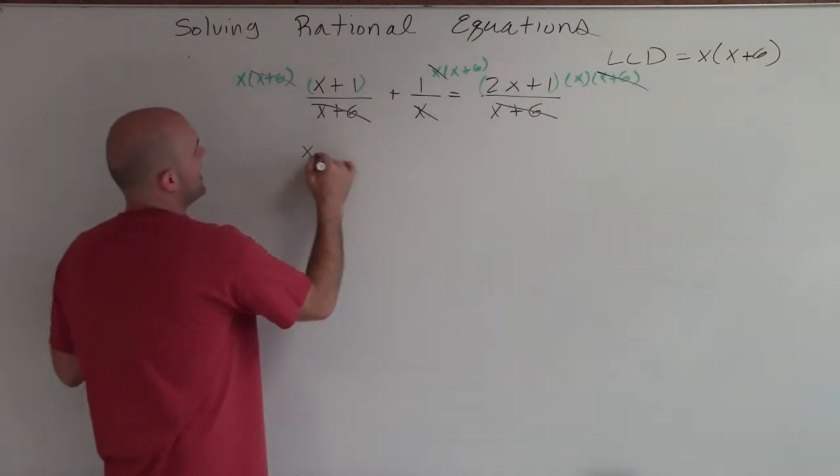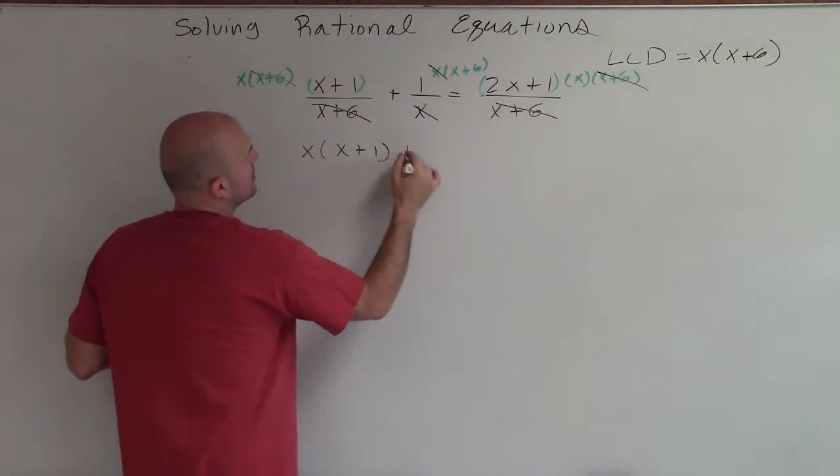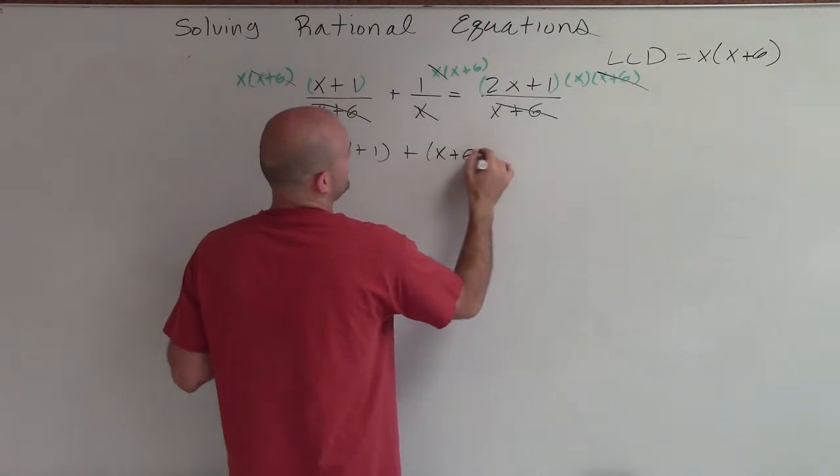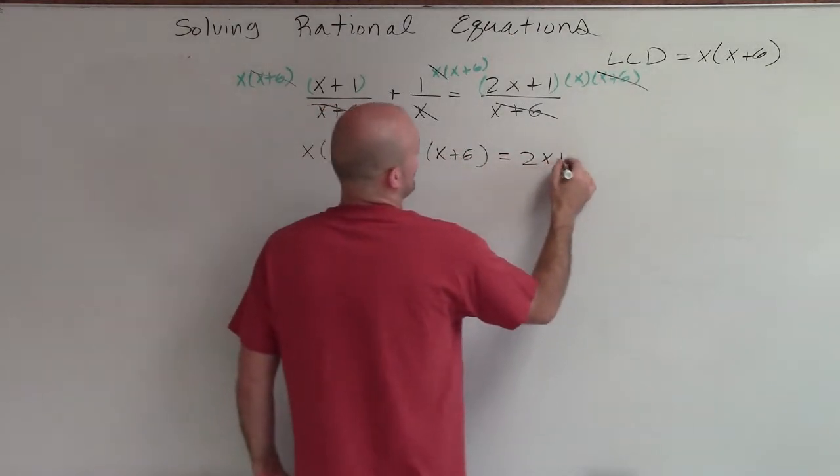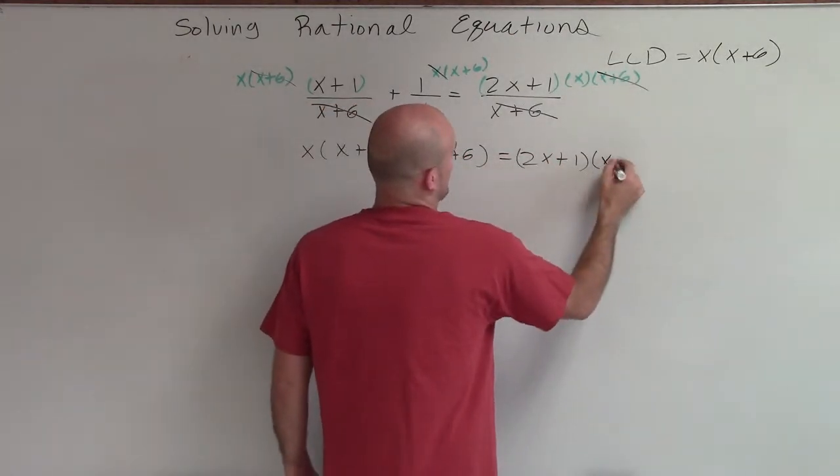Therefore, I'm left with x times x plus 1 plus 1 times x plus 6 equals 2x plus 1 times x.